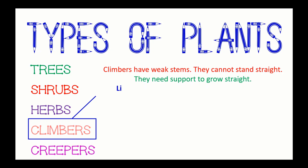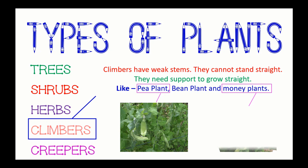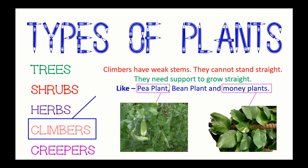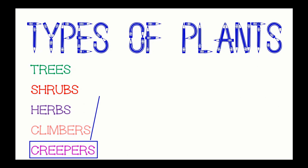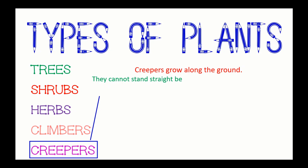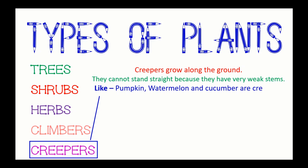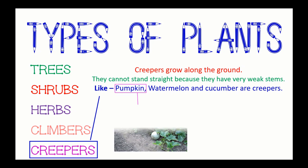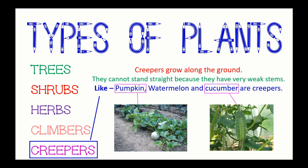Climbers have weak stems — they cannot stand straight and need support to grow, like pea plants, bean plants, and money plants. Creepers grow along the ground and also cannot stand straight because they have very weak stems. Examples of creepers are pumpkin, watermelon, and cucumbers.